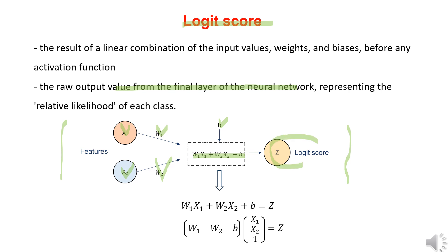We can express this as a formula, which can be represented in matrix form, and it reflects the relative likelihood for each class.